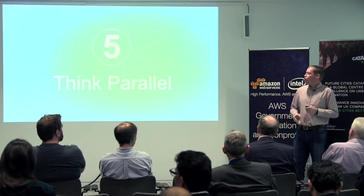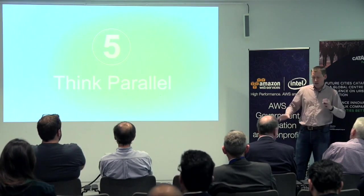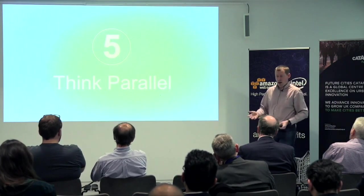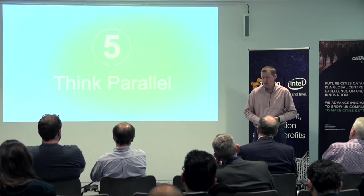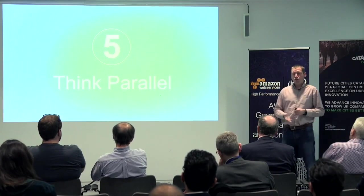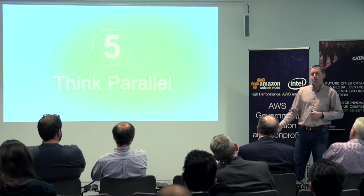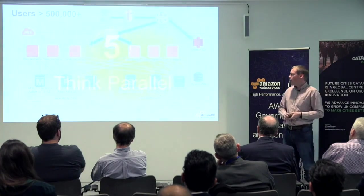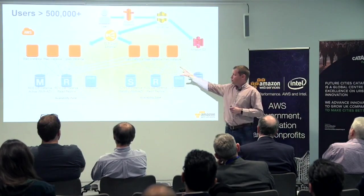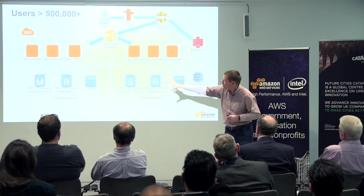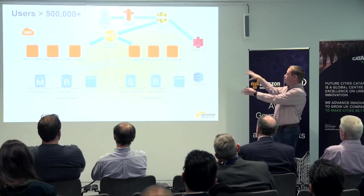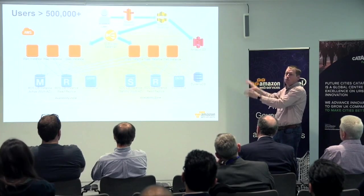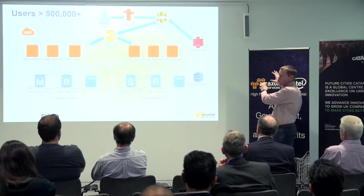Think parallel. AWS is a pay-as-you-go model — we charge typically per hour. If you take a particular instance that costs 10 cents per hour, running it for 10 hours costs $1. Or you could run 10 boxes for one hour and still pay that dollar. This leads you to think in parallel. When you're deploying an instance, you can deploy the same thing in parallel as well and begin to scale by effectively replicating services and pushing them out.